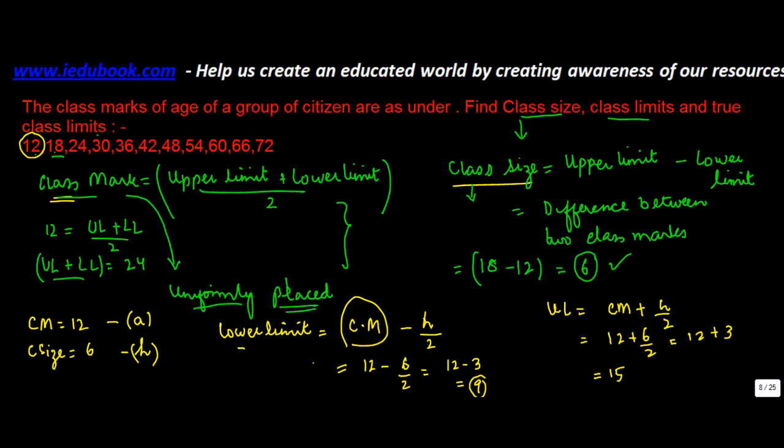So, the lower limit of the first class is 9, and the upper limit is 15. And if you take the class mark for these two, that will be equal to 9 plus 15 divided by 2, or 12, which is actually what we have. And even the class size, which is the difference between these two is 15 minus 9, which is 6.